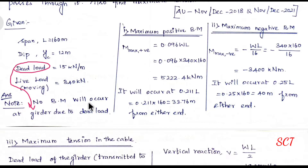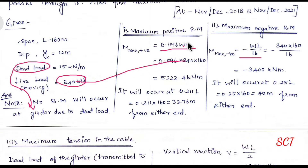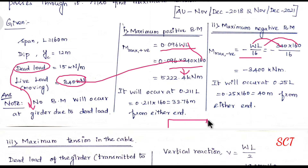No bending moment will occur in the girder due to dead load — only live load will act. Maximum positive bending moment formula is 0.096 × W × L. Negative bending moment is −WL/16. With W = 340 and L = 160, maximum positive bending moment = 522.4 kN·m.